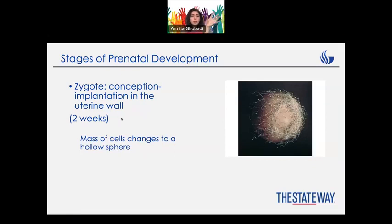The first step in prenatal development is zygote, or let's say conception, which means when a sperm and egg get together. It's going to be any time between, let's say, 2 weeks, and the whole shape of the zygote is going to be a mass of cells, which can be in a shape of a hollow sphere.